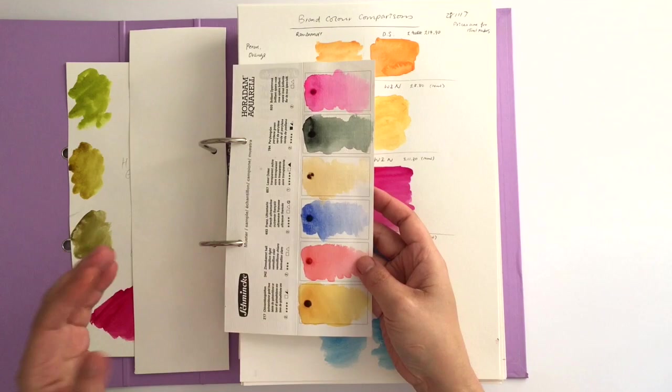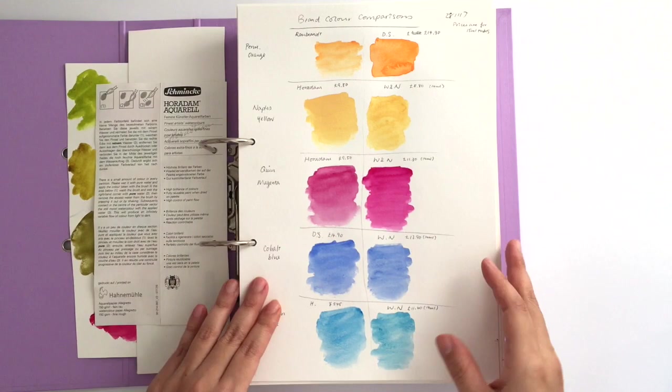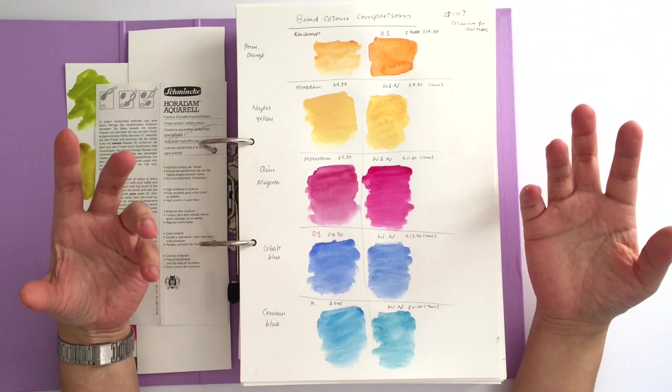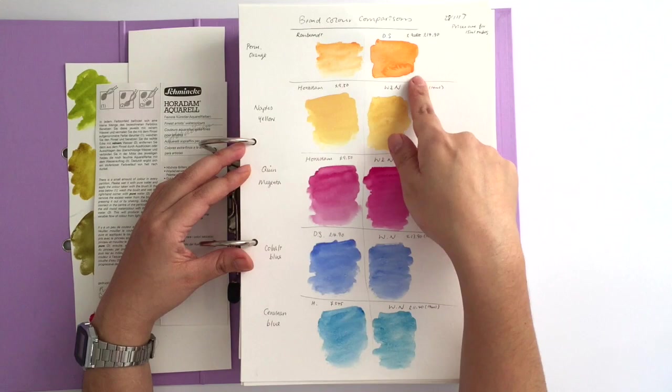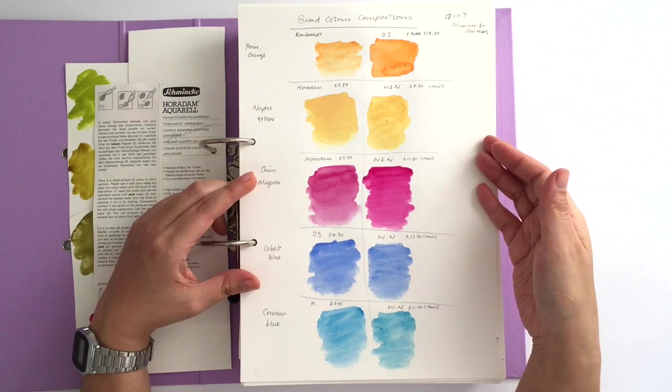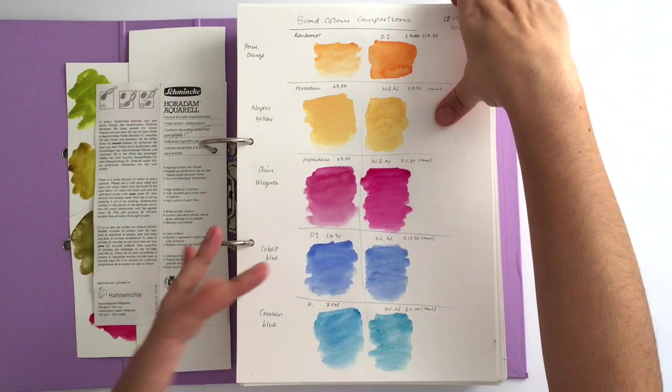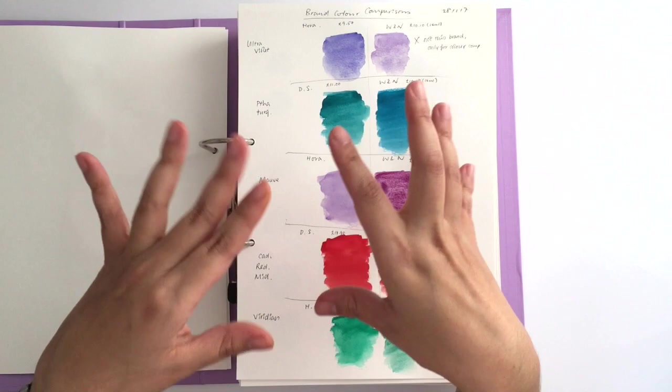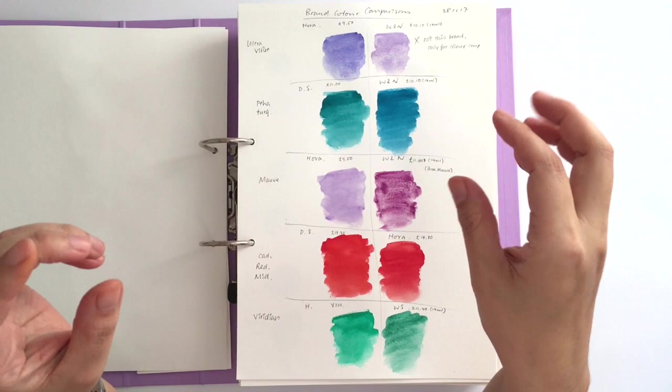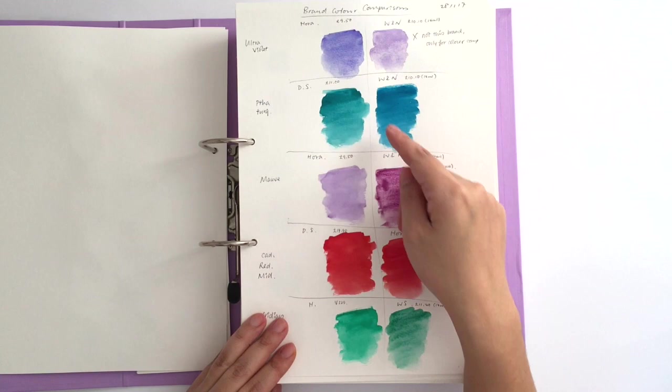Then here I'm just comparing color names and how different they are across brands. Just these two above, permanent orange, one's from Rembrandt one's from Daniel Smith. Some of the colors are quite similar, they're passable as the same color. But even if it has the same name and pigment, depending on the processes they go through, each brand has very different colors. So I was just experimenting on which colors you can reliably switch out.